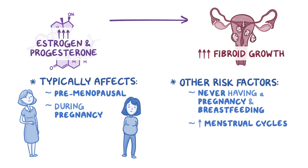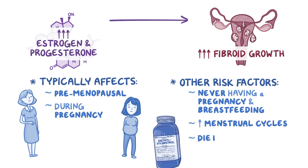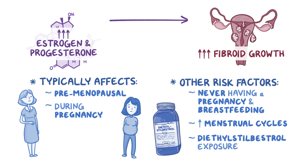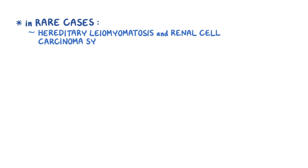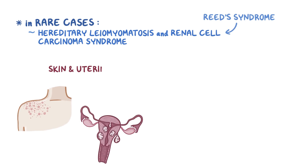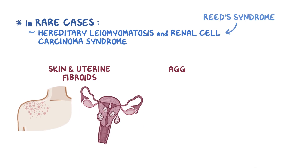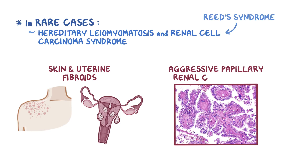A historical risk factor that's less relevant now was exposure to diethylstilbestrol, an estrogen medication that used to be given to pregnant women. Finally, in rare cases, fibroids are linked to a hereditary condition called hereditary leiomyomatosis and renal cell carcinoma syndrome, also called Reed's syndrome, which causes skin and uterine fibroids and an aggressive form of papillary renal cell cancer.